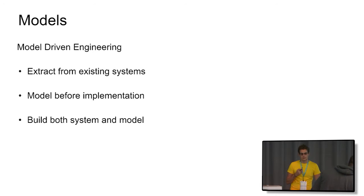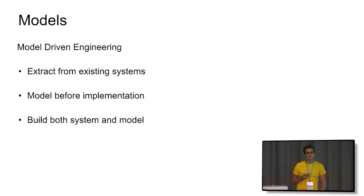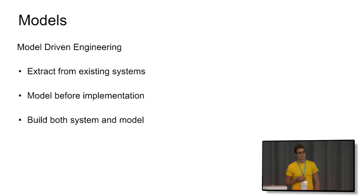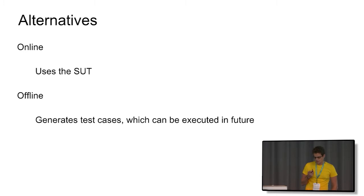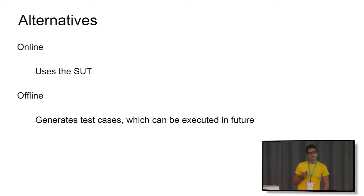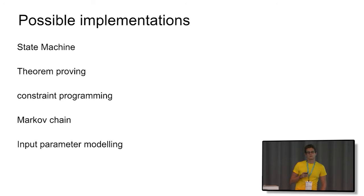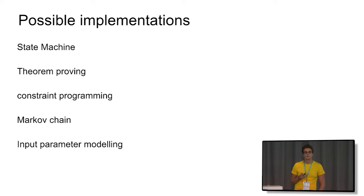As for modeling, there are several approaches. First is to extract from the existing system how it really works — of special interest in projects with long history and many product features. Another is to model before implementation, applicable to crucial things. The third approach is to build both the system and the model together. The alternative is to do it online or offline, whether we use the system under test or not. In the offline case, we generate test cases and postpone them to the system under test. Possible implementations include theory improvement, state machines, and so on.